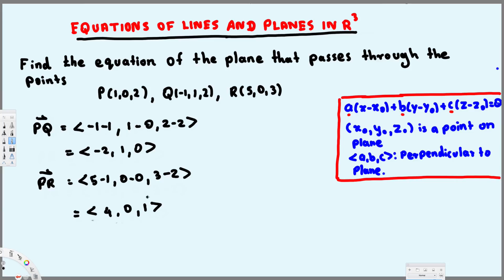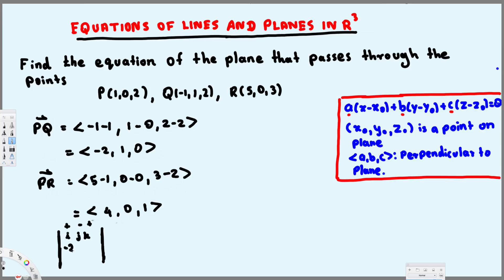Now we have two component vectors and we need to do the cross product. To do the cross product, we use the cofactor method — that is the plus-minus-plus sign pattern — and we place i, j, k in the top row.